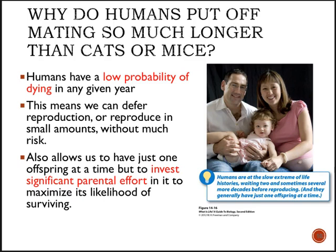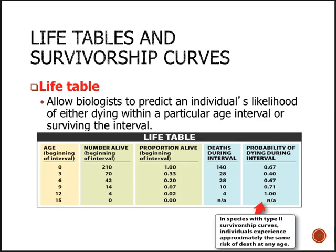Historically, when there wasn't much modern medicine, people had more babies because offspring survival wasn't as certain. We can measure these probabilities of surviving into the next generation by looking at something called life tables and survivorship curves. Population ecologists use these for many different species.